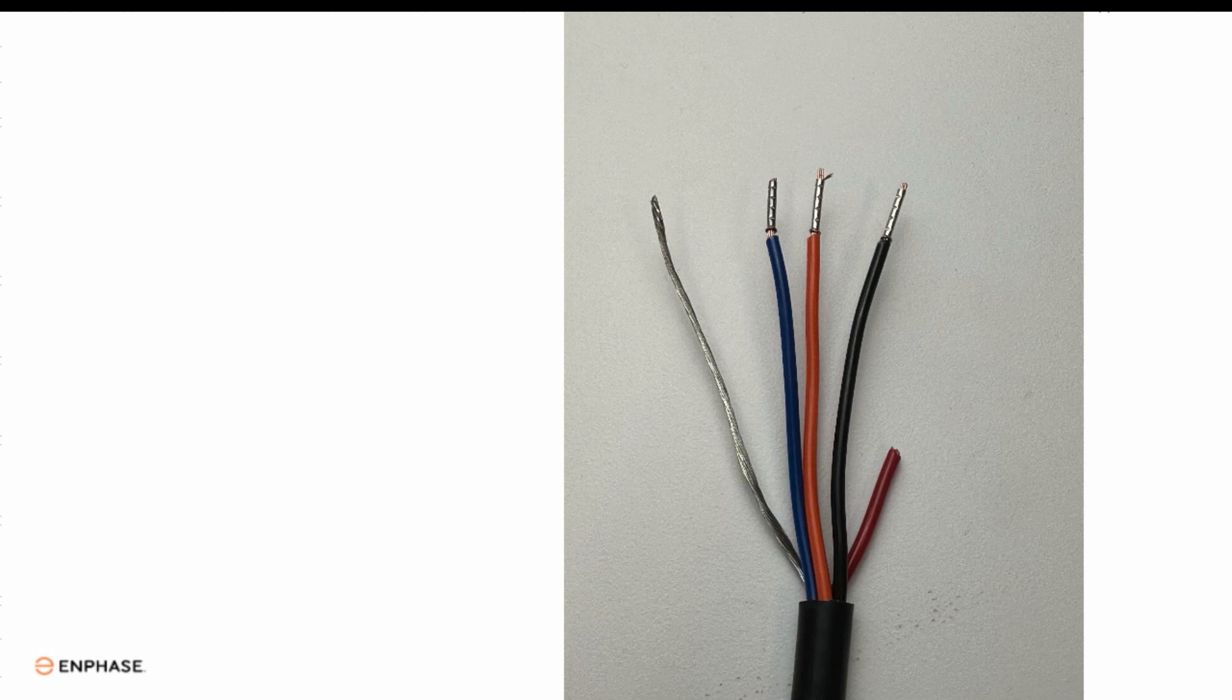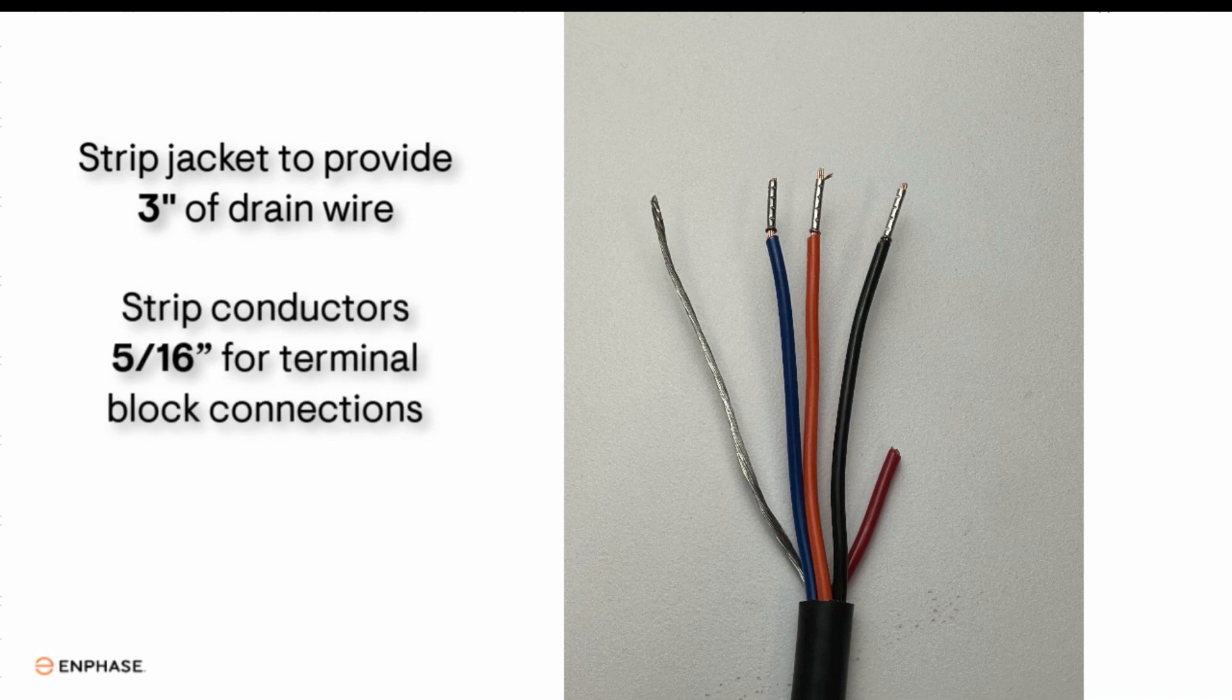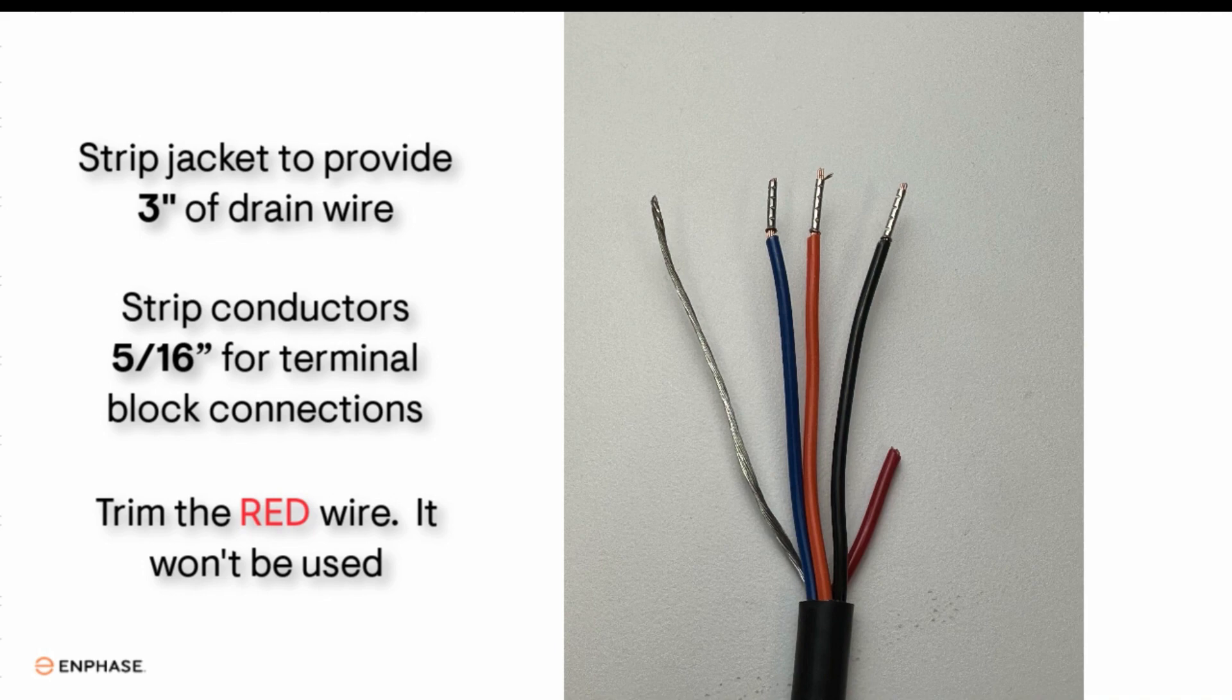Strip the control cable insulation at both ends. You'll need about three inches of drain wire. Strip back the blue, orange and black wires by 5/16th of an inch and trim the red wire down. You won't need it.